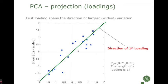What we read out of this loading is that height and shoe size are positively correlated, because these two numbers have the same sign and approximately the same magnitude.